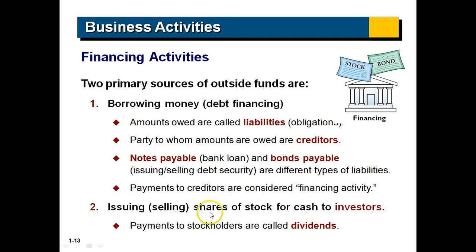The other way to raise funds is by issuing shares of stock for cash to investors. Cash will come in, but if we pay money to the stockholders, that's called a dividend and is also considered a financing activity. So if you have extra money to invest, you could loan money to a corporation and be a creditor, or buy shares of stock in the company and be an investor — two different ways to have a financial relationship with the company.